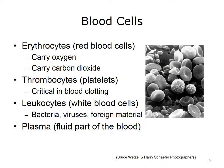The cells in blood fall into three main categories. Erythrocytes, or red blood cells, carry oxygen to tissues and cells throughout the body. Erythrocytes also pick up carbon dioxide, which is then eliminated through the lungs of the respiratory system. The second category of blood cells, thrombocytes, also known as platelets, are critical in the blood clotting process. Without thrombocytes, a simple cut might mean that you would bleed to death.